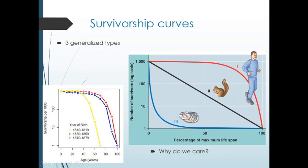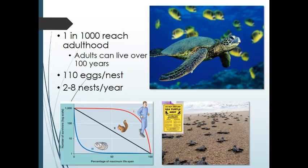I want to spend some time talking about why we care about classifying an organism into type 1 versus type 2 versus type 3 survivorship curve. A lot of people are like, okay, so we know that oysters are type 3 — why does that matter? Well, let's take an example of a really charismatic animal: a sea turtle.